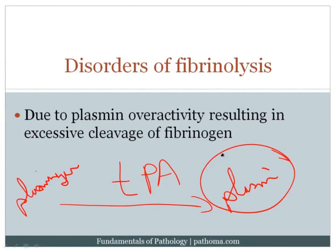Plasmin does three things. First, it cleaves fibrin — which was holding the thrombus together — and also cleaves serum fibrinogen, stopping production of any future thrombus. Second, it destroys coagulation factors, shutting down the ability to form additional blood clot. Third, it blocks platelet aggregation, preventing further clot formation. Plasmin both lyses the existing clot and shuts down additional clot formation. To prevent overactivity, alpha-2-antiplasmin inactivates plasmin.